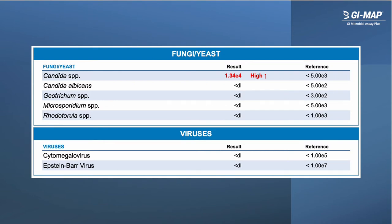The next section of GI Map includes relatively common fungi and yeast that may be found in the gastrointestinal tract and occasionally cause symptoms. Candida species in particular are commonly associated with symptoms such as bloating, abdominal discomfort, and food sensitivities. Some Candida species, such as Candida albicans, have been linked to certain autoimmune and inflammatory conditions including rheumatoid arthritis and inflammatory bowel disease.